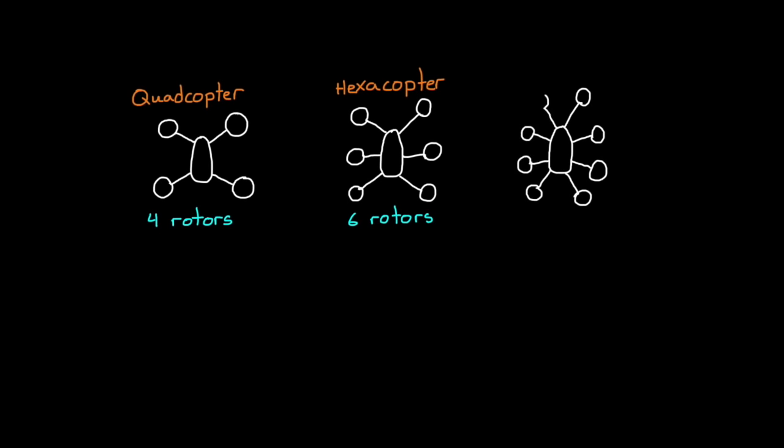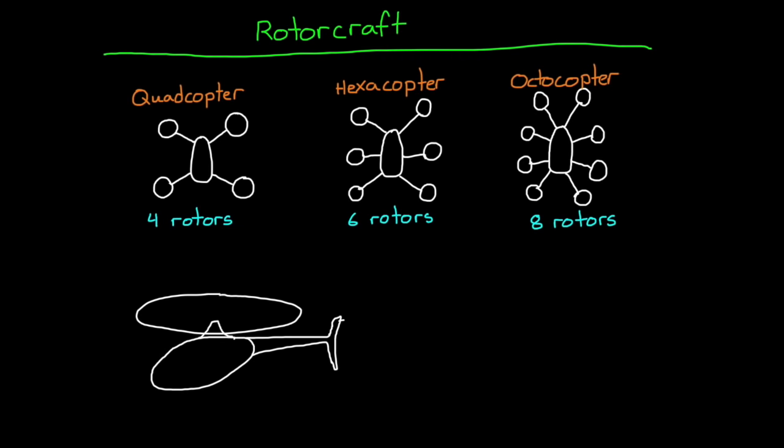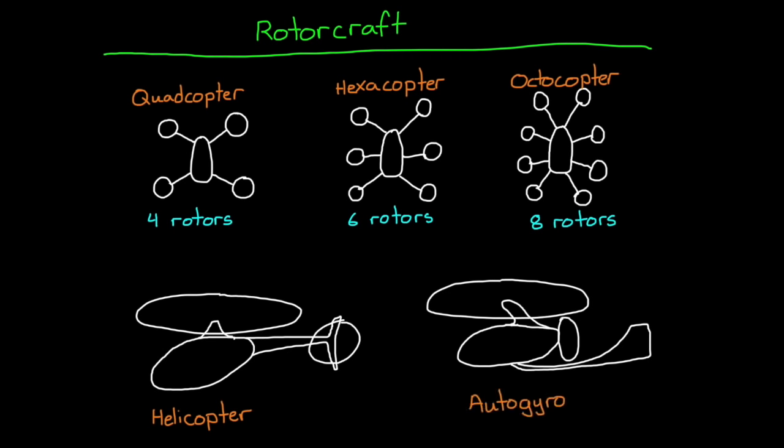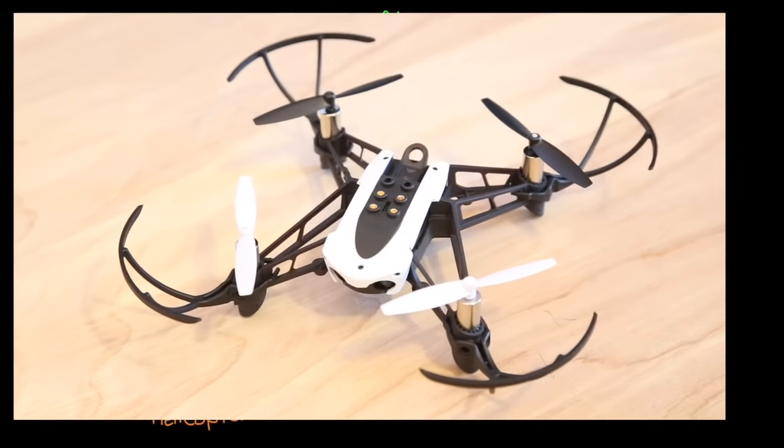In this series, we're focusing on the control strategies for a quadcopter, named so because of their four rotating propellers. Similarly, you could add more rotors and then they take on names like hexacopter and octocopter. But all of these drone-style flying machines are part of an entire family of rotating wing aircraft called rotorcraft. This includes the familiar helicopter and the less familiar autogyro, as well as any other flying machine that uses a rotating wing rather than a fixed wing to generate lift. For this series, we're going to be designing a control system for a quadcopter, the Parrot Mini Drone.